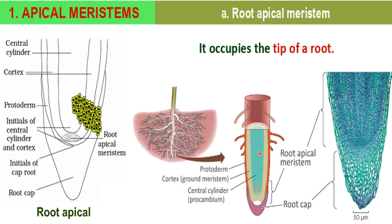You need to learn about these layers of the root because here we are studying about the anatomy of plants — the internal structure of the plant. Some part names are given here. The central most part is the central cylinder, outside that is the cortex which is called ground meristem, and outside the cortex is the protoderm.